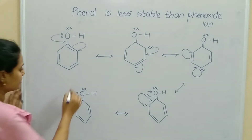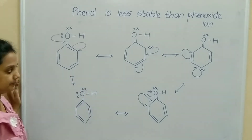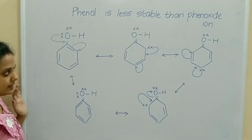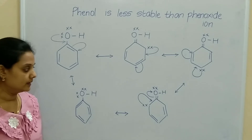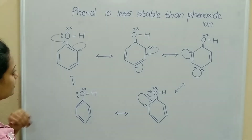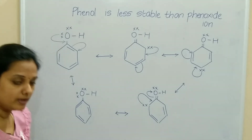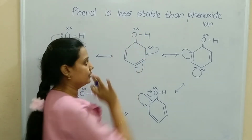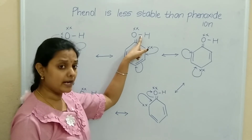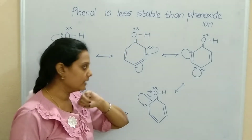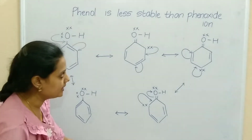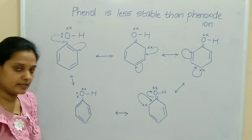So you can see the resonating structures — there is also one more. These are the five resonating structures for phenol. Now, if you check oxygen in the resonating structures, how many bonds is it making? It is making one, two, and three — two with the carbon of the ring and one with hydrogen — so three bonds total. Make a note of the resonating structures and try to draw by yourself. This is for phenol's resonating structures.